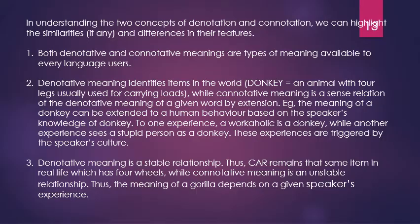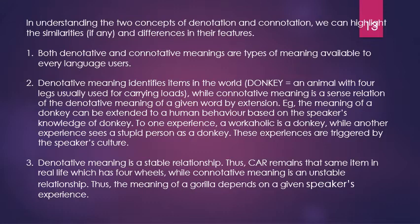The same meaning of the word 'donkey' can be extended to human behavior — to mean a stupid person, a workaholic, and so on. Number three: denotative meaning has a stable relationship. For example, the word 'car' remains the same item in real life — a vehicle with four wheels. While in connotative meaning, there is no stability; the speaker's experience, culture, and environment may determine the connotative meaning, and it can change over time, unlike denotative meaning which is always stable. Connotative meaning can change according to time, environment, and culture of the speakers and hearers.